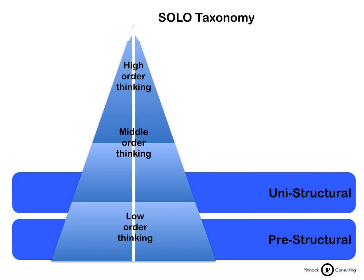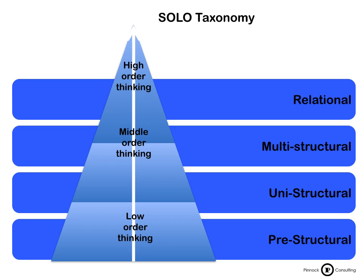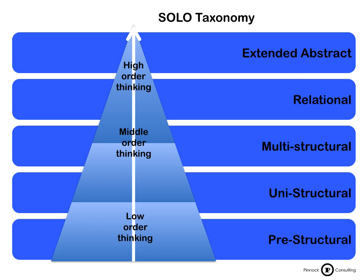The uni-structural level is where learners can make simple and obvious connections, linking two basic facts together. The next level is where skills really come in — learners need to make enough connections to carry out the skill or complete the concept. At the relational level, they can make all the necessary connections and show understanding of the skill or concept and how it relates to the environment or other concepts. Then the extended abstract — the highest order thinking — is where learners can make connections within the context as well as connections with other contexts and situations, where emotion and their own interpretation come in.